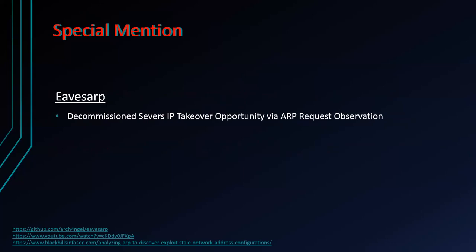A special mention to our friend and colleague at Black Hills, Justin Angel, who created a tool called Eve's ARP. If everything you're trying to do doesn't work because everything is patched, this tool looks for ARP requests and tells you if there's a decommissioned server or something that's no longer present — you can take over its IP and hopefully receive something from other servers. Justin made a webcast and there's a blog about it on the Black Hills website.